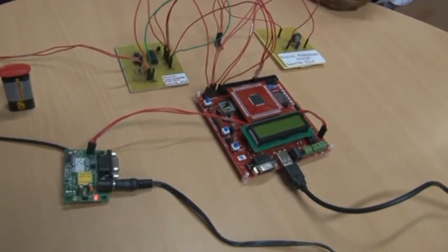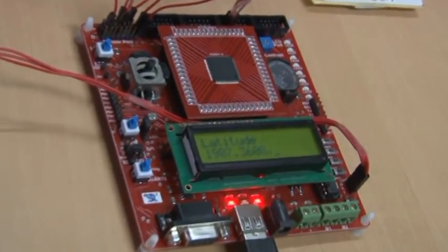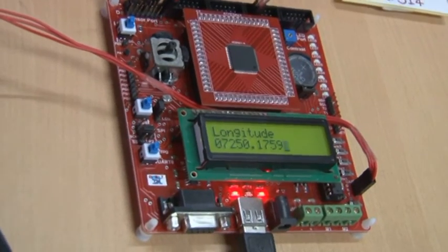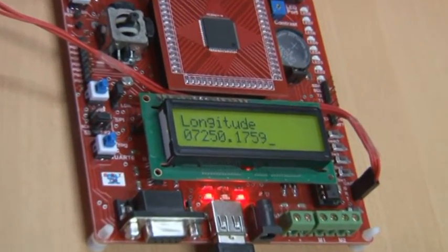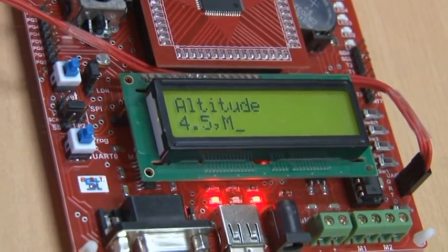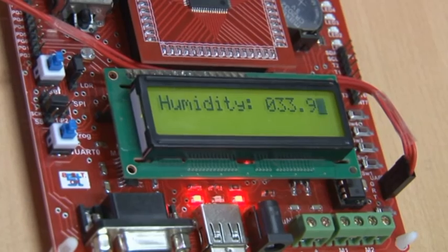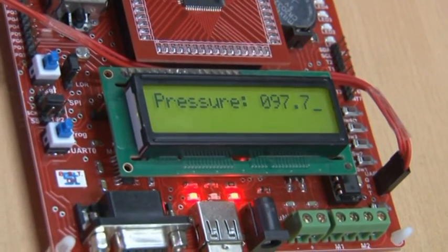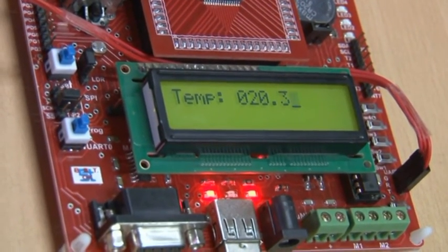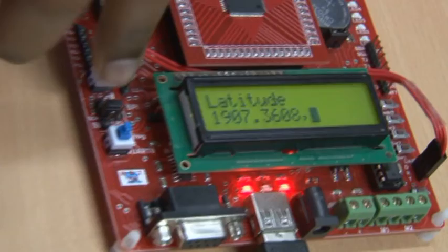Let us now have the demonstration of the project. The latitude is mentioned. The temperature measured is in degree Celsius. A suitable delay has been provided so that these values are discernible.